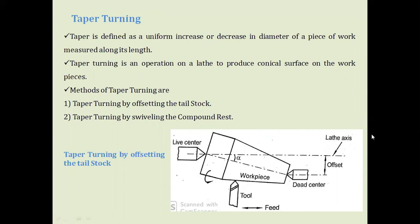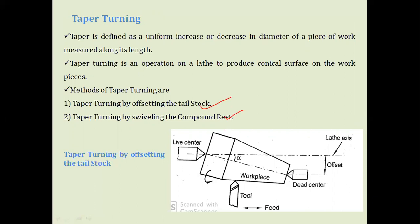Next comes the taper turning operation. In the turning operation discussed earlier, the cutting tool moves parallel to the axis and reduces the diameter, developing a cylindrical surface. But in taper turning, instead of a cylindrical surface, we develop conical surfaces. For the syllabus, taper turning is developed by two methods: one is by offsetting the tailstock, and the other is by swiveling the compound rest.